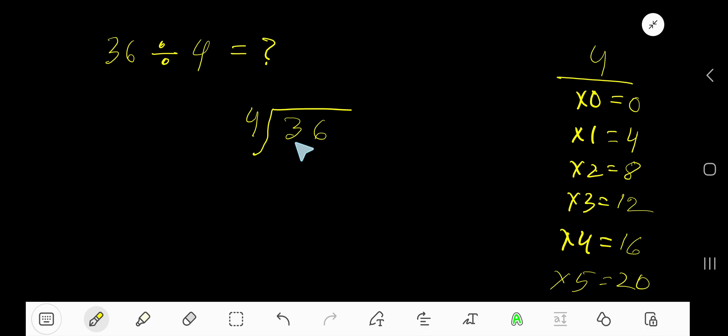However, 4 goes into 3 how many times? 0 times. As 3 is less than 4. So 0 times, 0 times 4, 0. Subtract. You are getting 3.